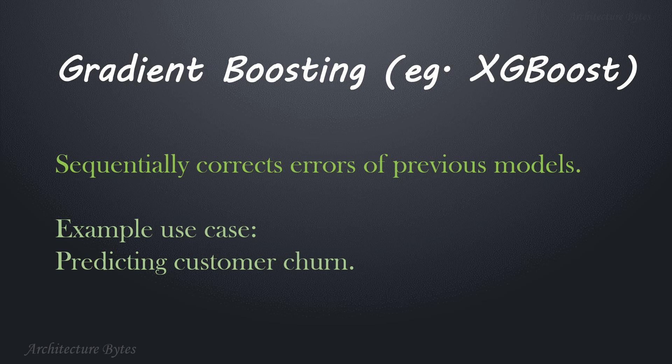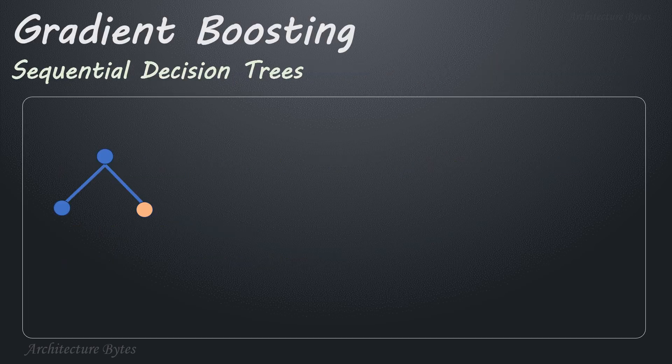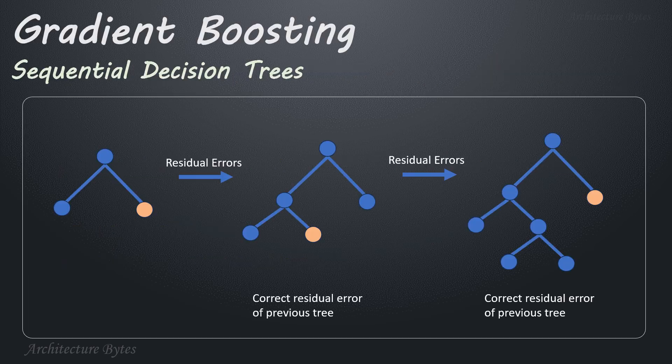Gradient boosting sequentially corrects errors of previous models. Example use case: predicting customer churn. An ensemble technique that builds decision trees sequentially, with each tree correcting the errors of the previous ones. It optimizes predictions by minimizing a loss function using gradient descent. The final model is weighted sum of all trees, making it powerful for both classification and regression.